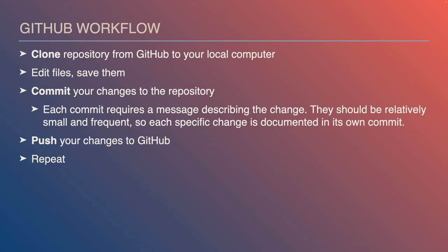Once you've made the commit, you manually push your changes to GitHub — they don't get automatically synchronized. Then you repeat the cycle: edit file, save file, commit, push. You're going to get very used to doing that. The number one thing that trips people up when first starting with GitHub is forgetting to commit or forgetting to push. If you've made a lot of changes without committing, it can be quite a mess to sort out.